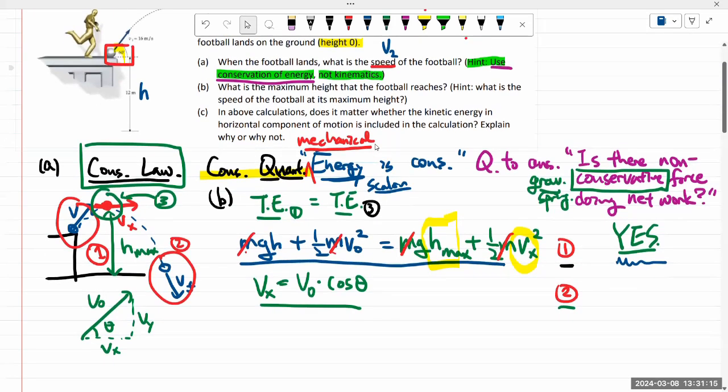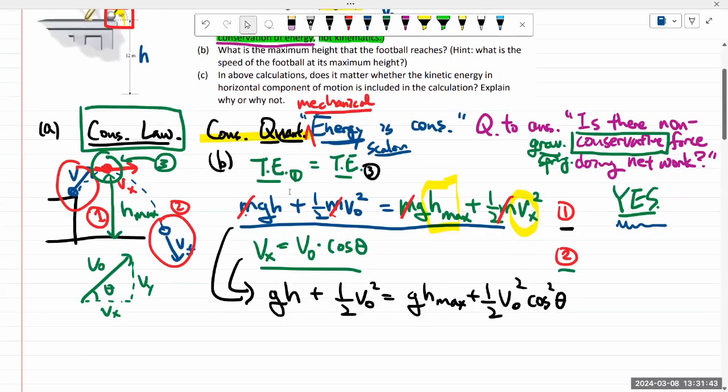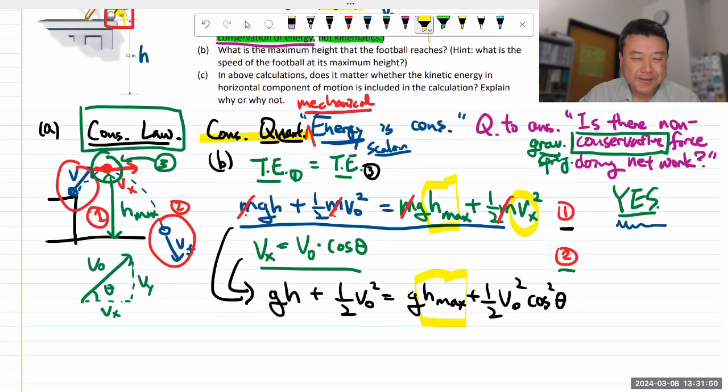We get, from equation one, plugging in equation two for Vx, we get GH plus 1 half of V0 squared is equal to GH max plus 1 half that squared. V0 squared, cosine squared theta. Okay, let me see if I can do this algebra in my head to solve for H max. I don't think it's all that hard, so let me do it in my head.